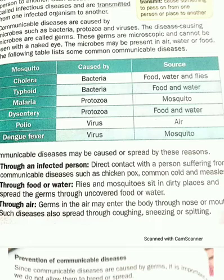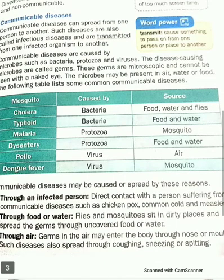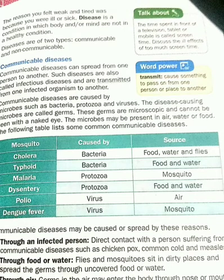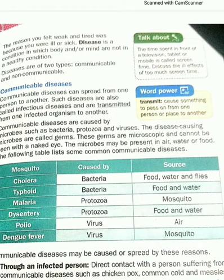Next, through food or water. If we eat infected food or drink infected water, sometimes we eat food which street vendors sell. Although it is very tasty, it is not hygienic. Flies and mosquitoes sit on dirty places and then sit on uncovered food or water, propagating and spreading infection. If we eat such infected food or drink that water, we can also suffer from disease.